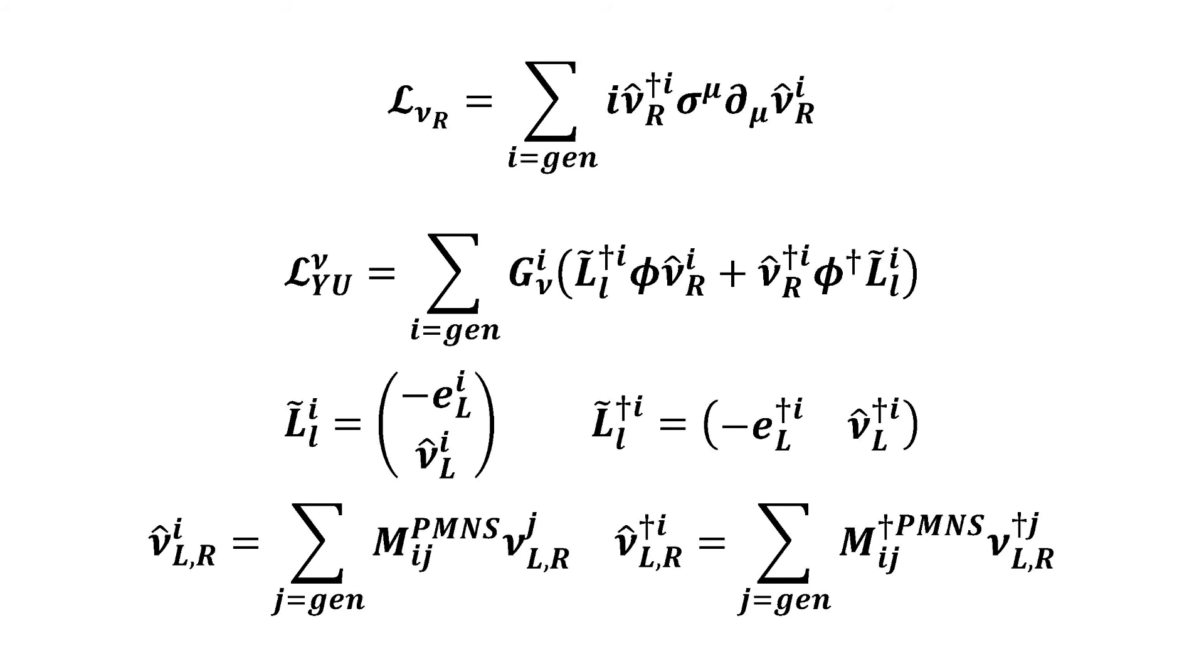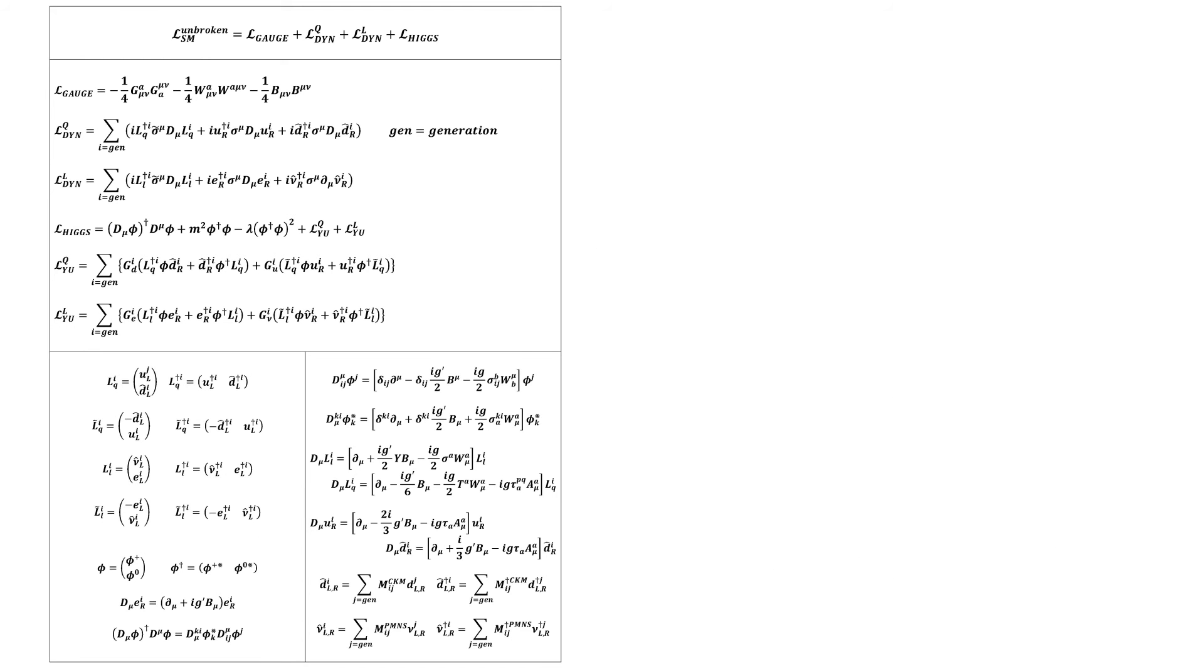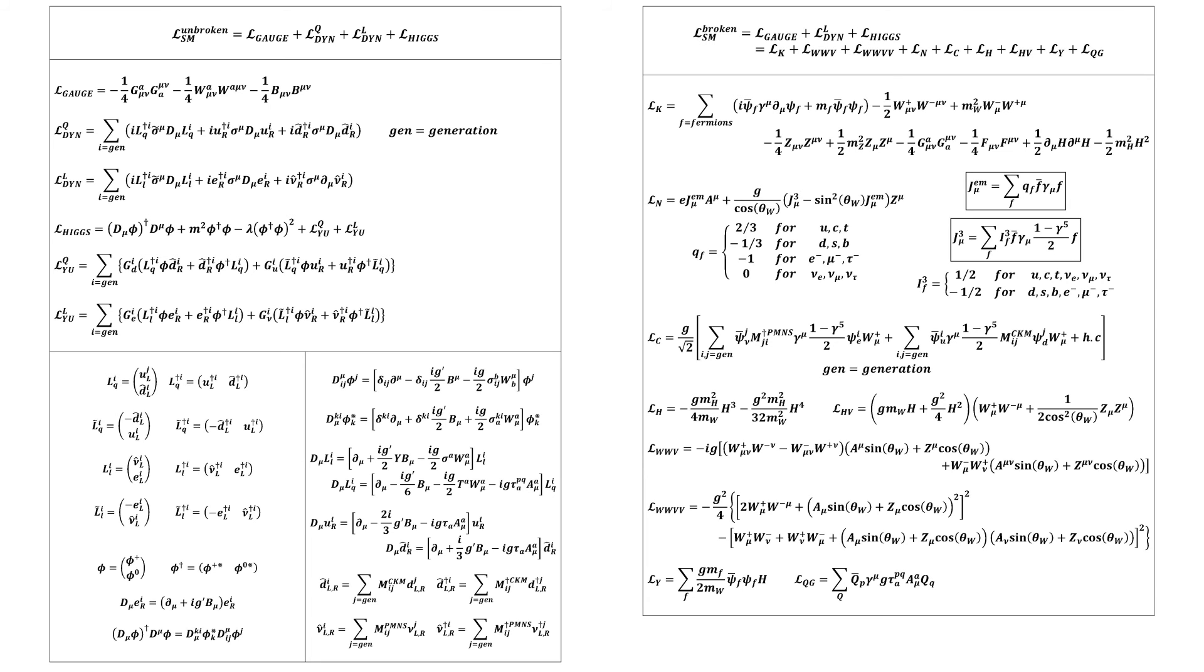If we insert that into the Standard Model, we see that the complete unbroken Standard Model Lagrangian becomes this for the case of non-zero neutrino masses. And in the spontaneously broken Lagrangian, we see quite straightforwardly that the following changes must result from the adjustments to the unbroken theory.